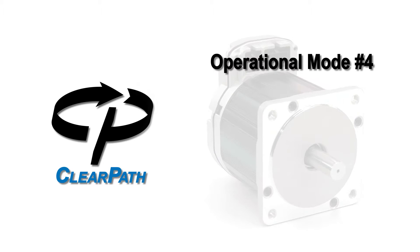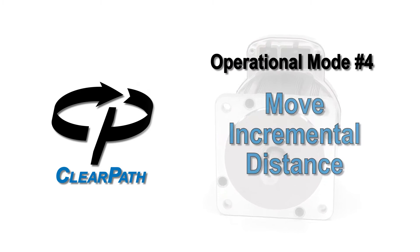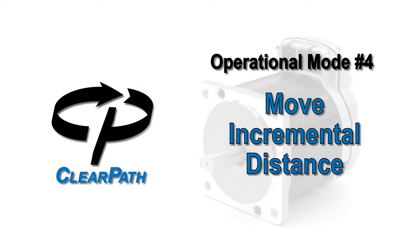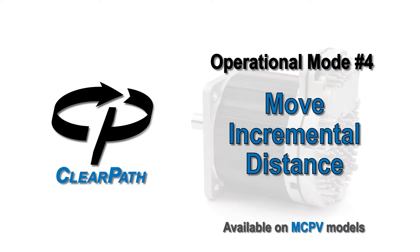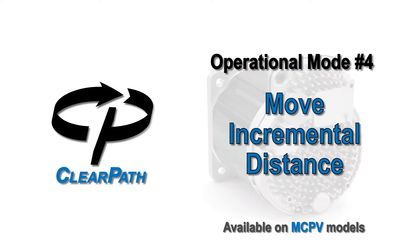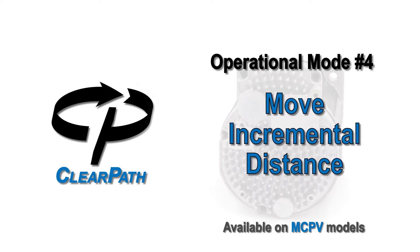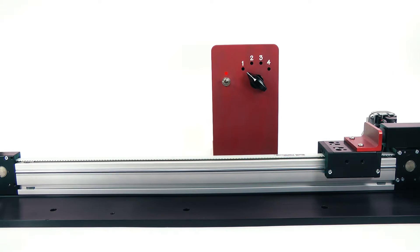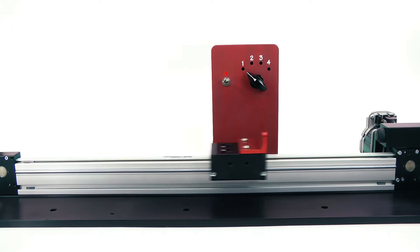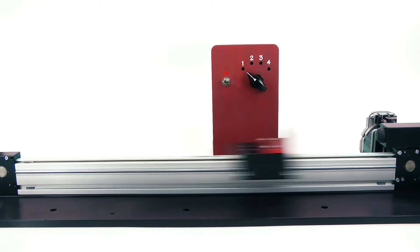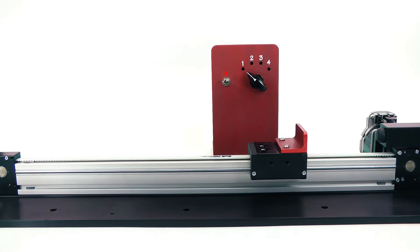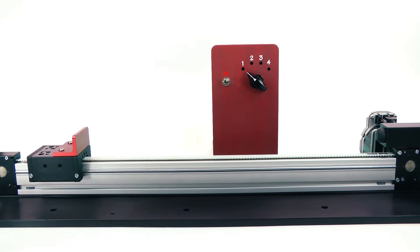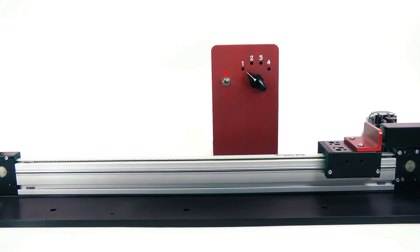ClearPath Operational Mode 4: Move Incremental Distance. Move Incremental Distance is the mode to use when you need to position to many locations that are integer multiples of each other, like with indexing tables.